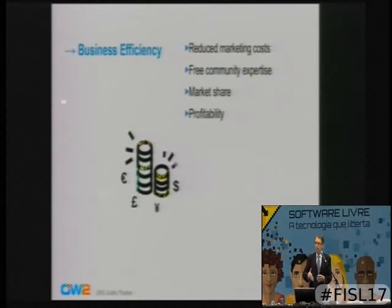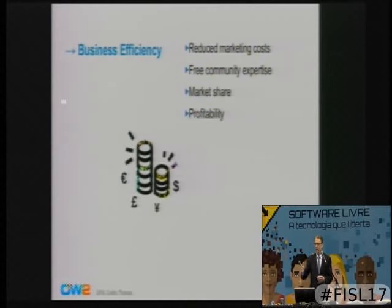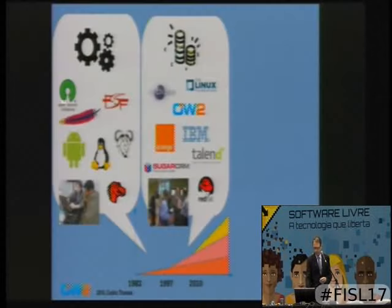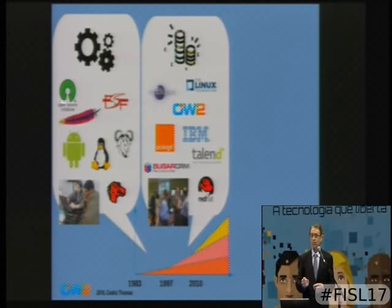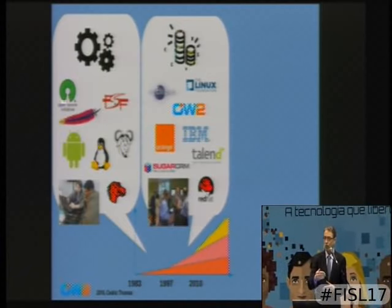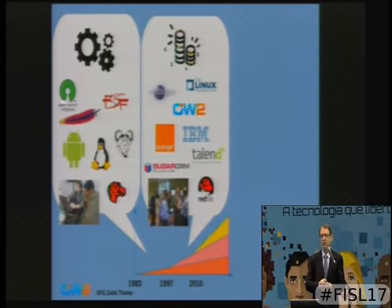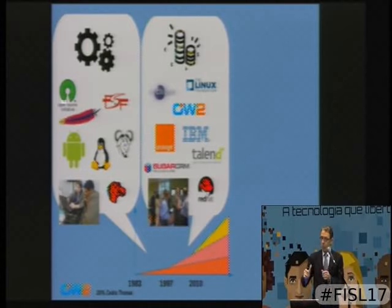It worked because there is a real business model and it provides business efficiency. Some think of open source like free marketing, but it works. We've had institutions built from that period: the Eclipse Foundation, the Linux Foundation as we know it today, and OW2. We are dealing not only with developers but with companies.